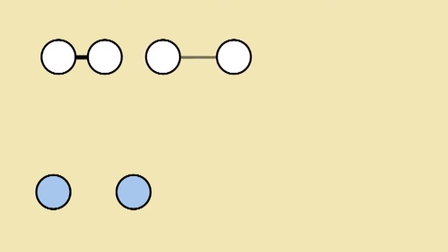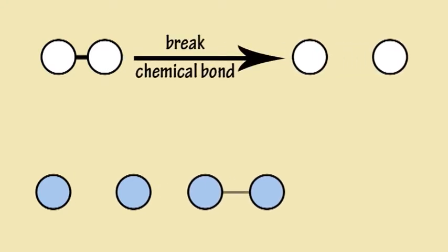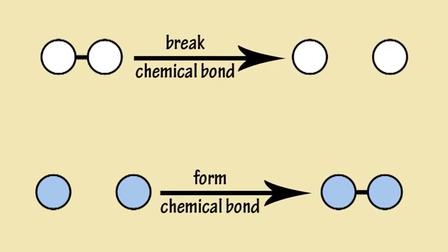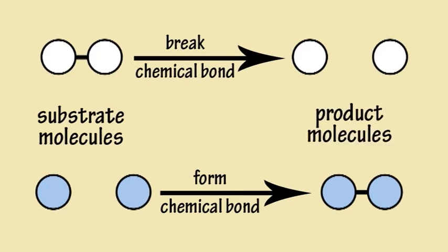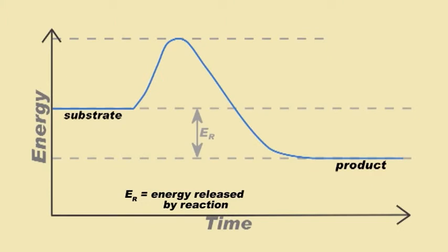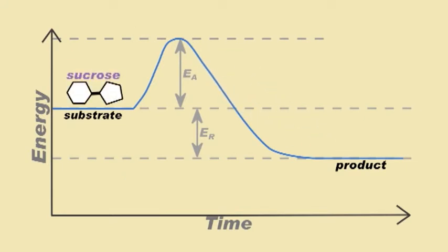Metabolic reactions involve breaking or forming chemical bonds to convert substrate molecules into product molecules. This requires energy, known as activation energy, either to stretch chemical bonds to breaking point or to force molecules close enough together so they begin to form new bonds.